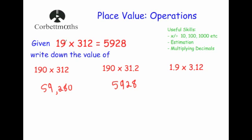The last one here: we've made the first number 10 times smaller. We've actually made the second number 100 times smaller — we've divided 19 by 10 to get 1.9, and divided 312 by 100 to get 3.12. So we're going to divide by 10 and then divide by 100, which is the same as dividing by 1,000. So 5,928 divided by 1,000 gives us 5.928.